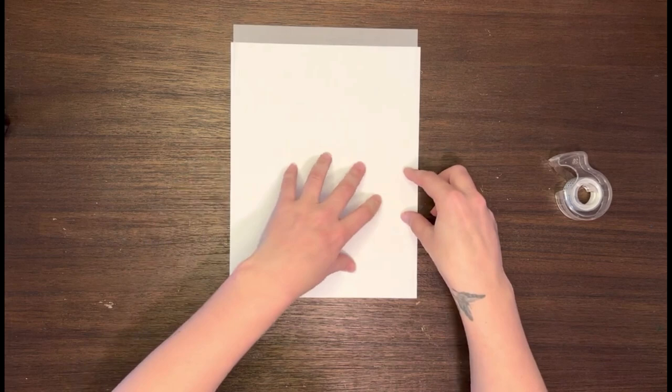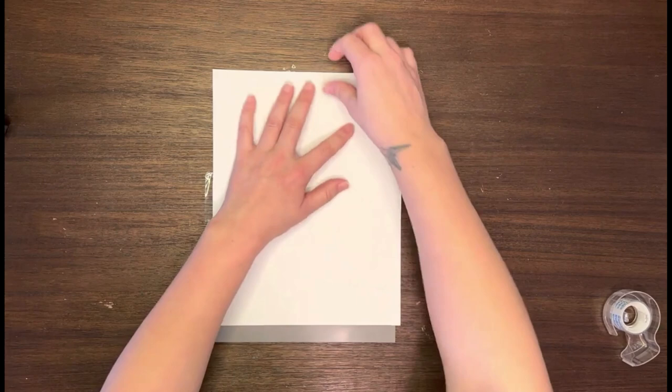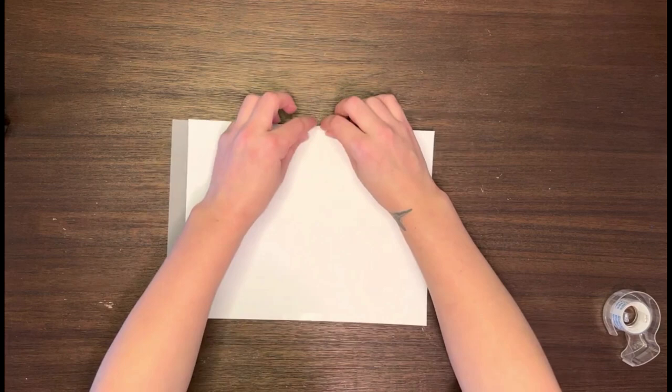And then what you're going to do is very just gently tape one right here, one right here and then I like to do just one right here. Not a whole lot of tape, just little pieces. So now we're just going to fold our piece of tapes over that way it's nice and flat and connected.